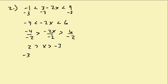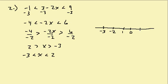Now let's rewrite this with the smaller term first: negative three less than x less than two. To graph the solution I've got negative three, negative two, negative one, zero, one, two on the number line. Since negative three is not included and two is not included, we have open circles on both. In interval notation, that's negative three to two with parentheses on both.